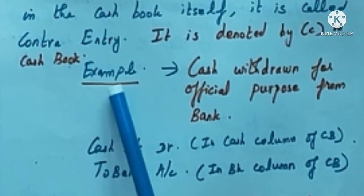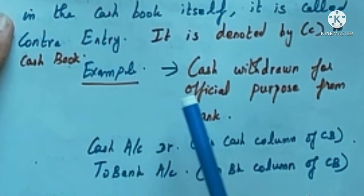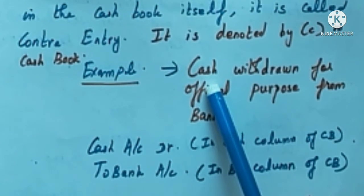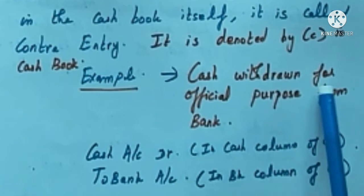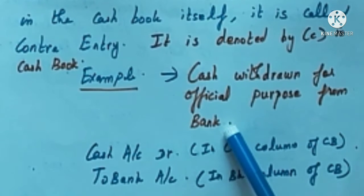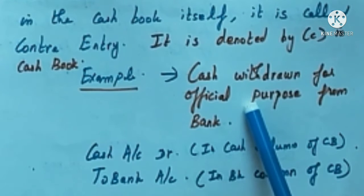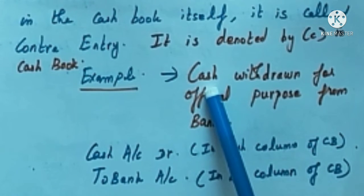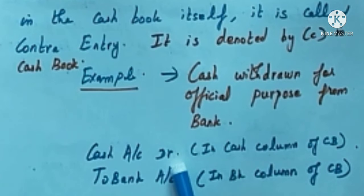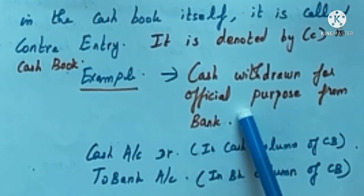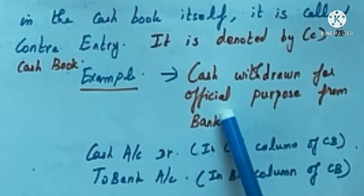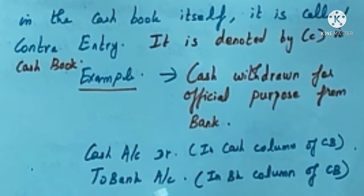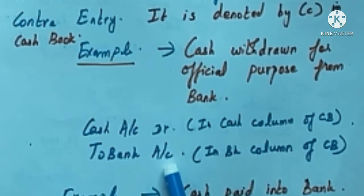Let's see an example to understand contra entry. Say the transaction is: cash withdrawn for official purpose from bank. When you withdraw cash, cash is coming in, so cash account is debited as per the real account rule — debit what comes in. When you withdraw cash from the bank, bank is the giver, so we credit the giver according to the personal account rule.